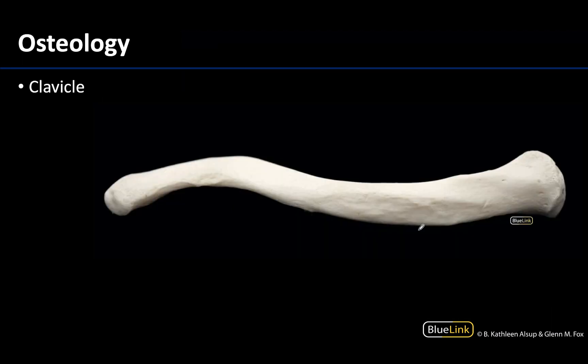Next we have the clavicle, which as we are in anatomy we will always call the clavicle rather than the collarbone. It is another very distinct-looking bone — you can see this kind of double curve associated with the shaft or body of the clavicle. It is going to be important in connecting the upper limb to the trunk and will be particularly important in terms of the root of the neck, so this will come up in these upcoming sessions.